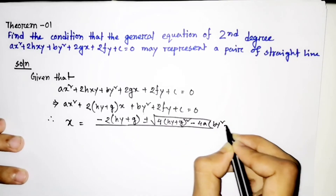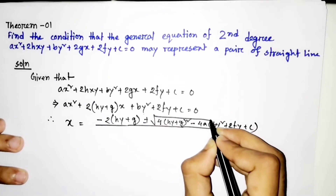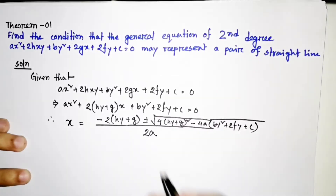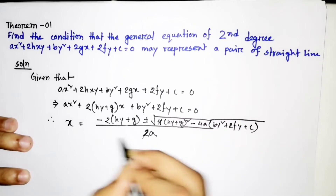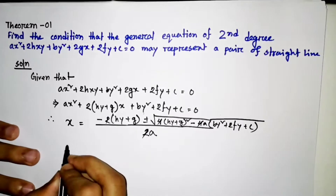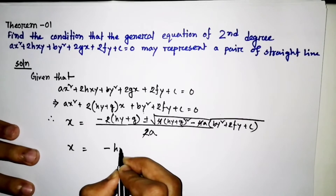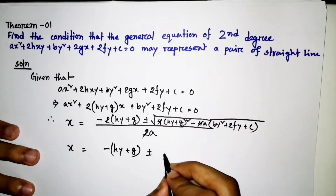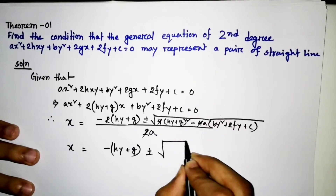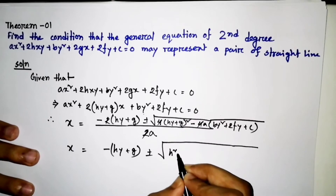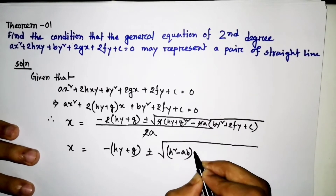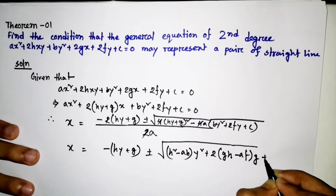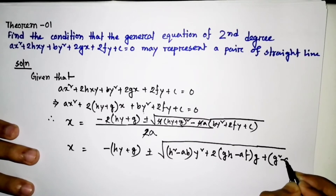Working through the algebra, we get the terms: H² minus AB, then y² plus 2 times GH minus AF, plus G² minus AC. These are the key discriminant expressions involved in deriving the condition.